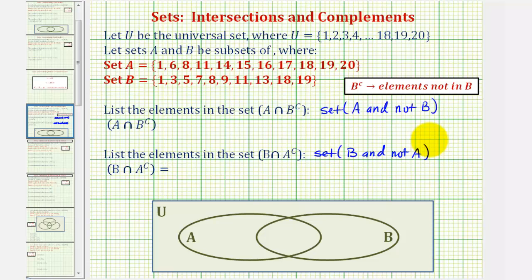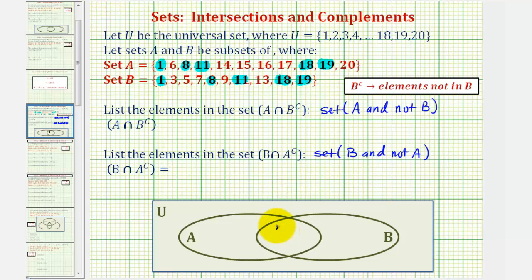Now let's complete our Venn diagram. Let's begin by determining which elements are in the intersection of set A and B, which would be the elements in this overlapping region here. Notice elements one, eight, eleven, eighteen, and nineteen are the elements that would be in the intersection of set A and set B. So we'll list these elements in this region here: one, eight, eleven, eighteen, and nineteen.